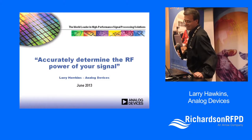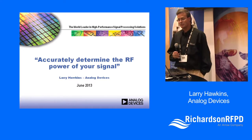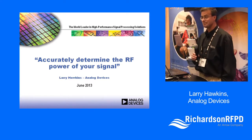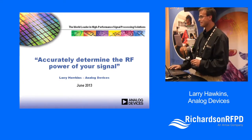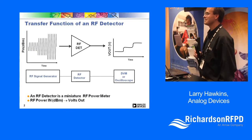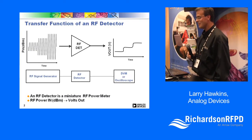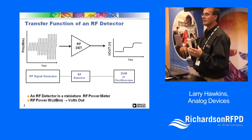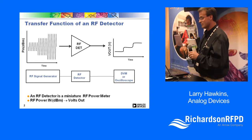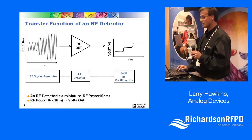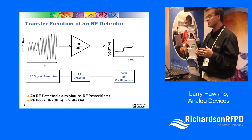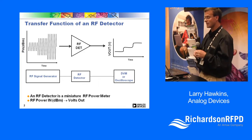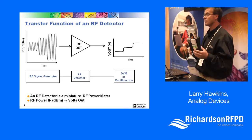My presentation today is on accurately determining the RF power of your signal — it's a lot about power detectors. The idea behind a power detector is quite a simple function: you put an RF signal in and get a voltage out. As the signal gets larger or smaller, your output voltage changes over a certain RF range. It's like an RF power meter.